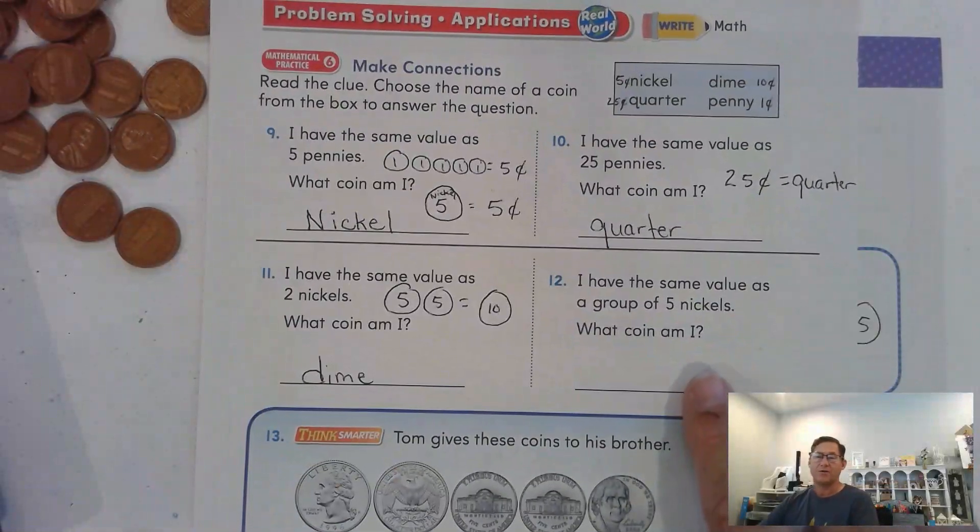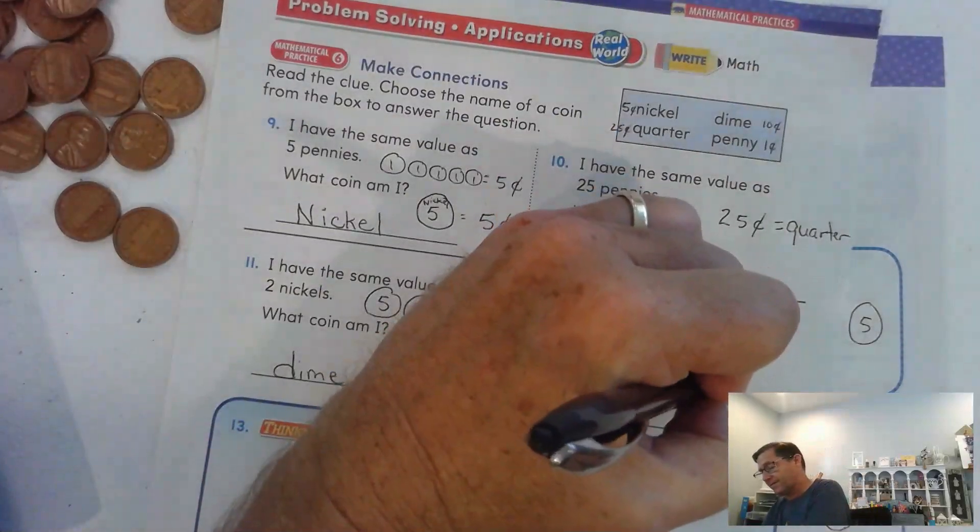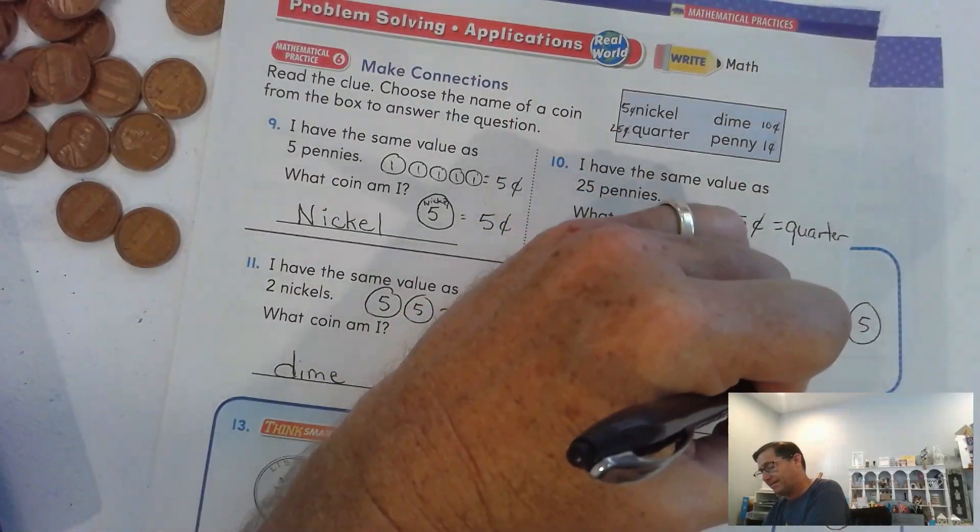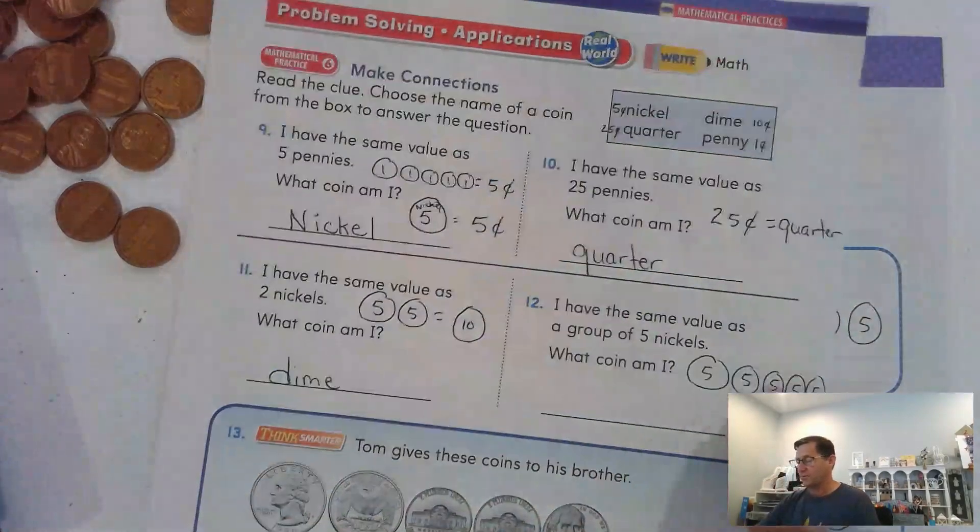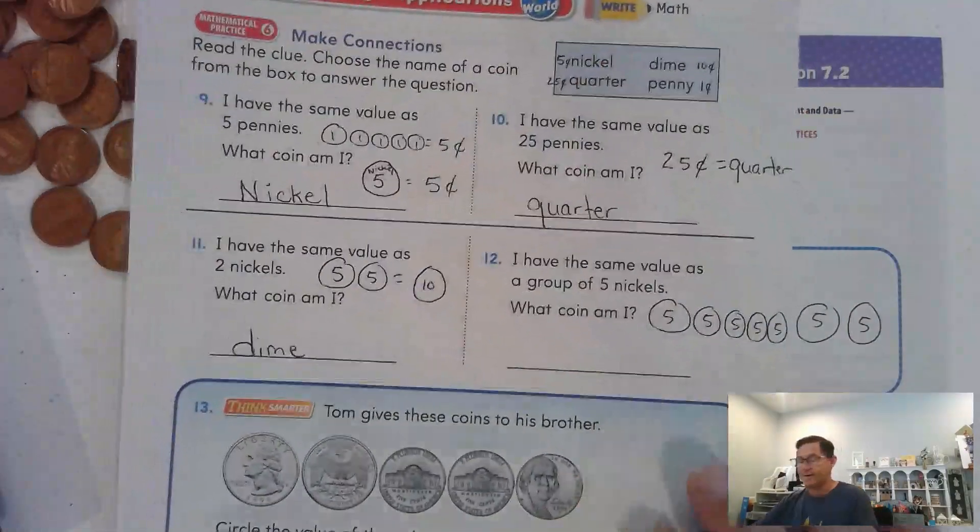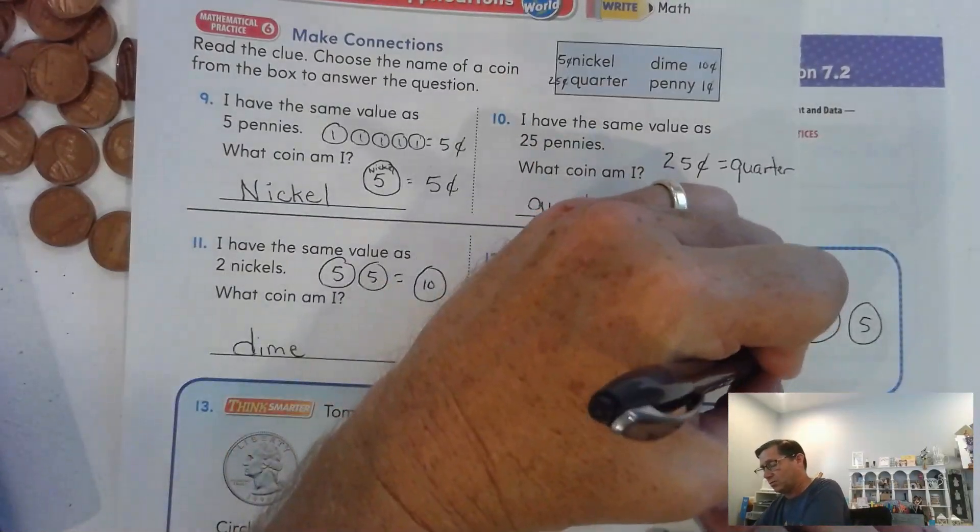I have the same value as a group of 5 nickels. 5, 10, 15, 20, 25. So 25 cents. So that equals a quarter again.